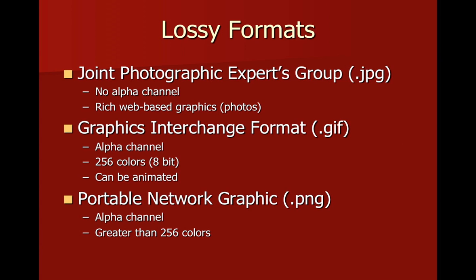One added bonus of the GIF format is that you can make animated GIFs. Animated GIFs aren't the highest quality animations nowadays, but it is a nice bonus for that format. The third format is the PNG, or Portable Network Graphic. It adds an alpha channel just like the GIF does, but one of its benefits is it stores greater than 256 colors, so you can have a photorealistic image with transparency in your PNG. The PNG doesn't store photographs quite as well as the JPEG — that's what the JPEG was designed for — but it does a pretty good job and comes pretty close.